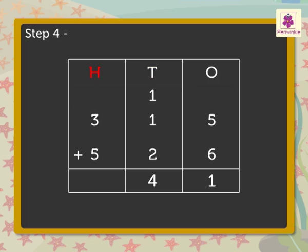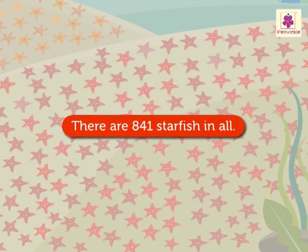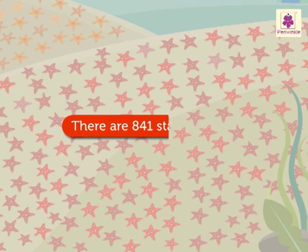Step 4: Add the hundreds. That is, 3 plus 5 is equal to 8. So, we got the answer as 841. 315 plus 526 is equal to 841. Thus, there are 841 starfish in all.